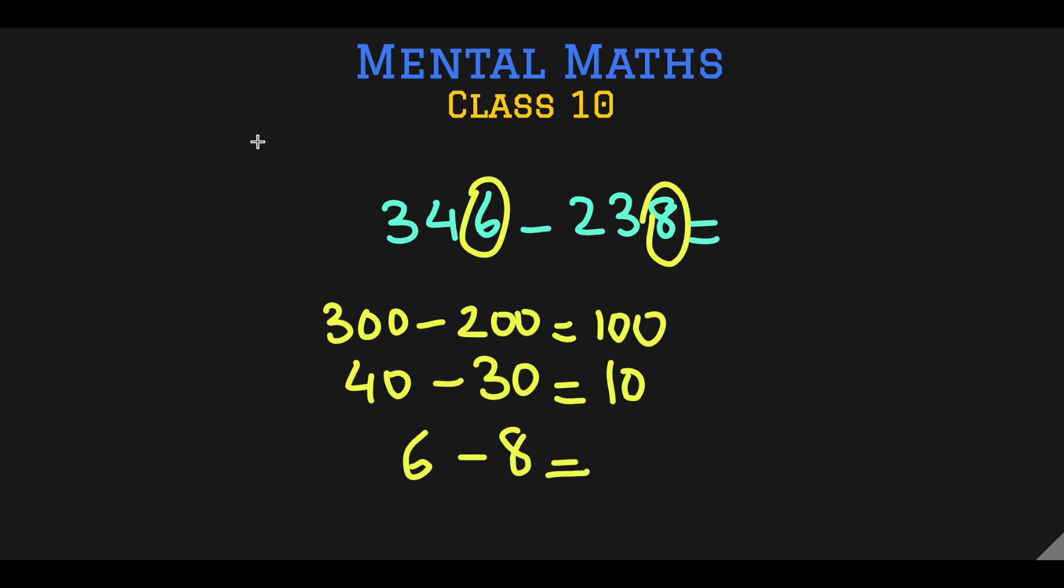Do you see the problem here? We cannot subtract 8 from 6 and we need this precious 10, and we need to give it to this 6 so that it becomes 16, and 16 minus 8 becomes 8. But what will happen to this 10? It will turn into a 0. There is no 10 here anymore. And now we add these three results to get 108.